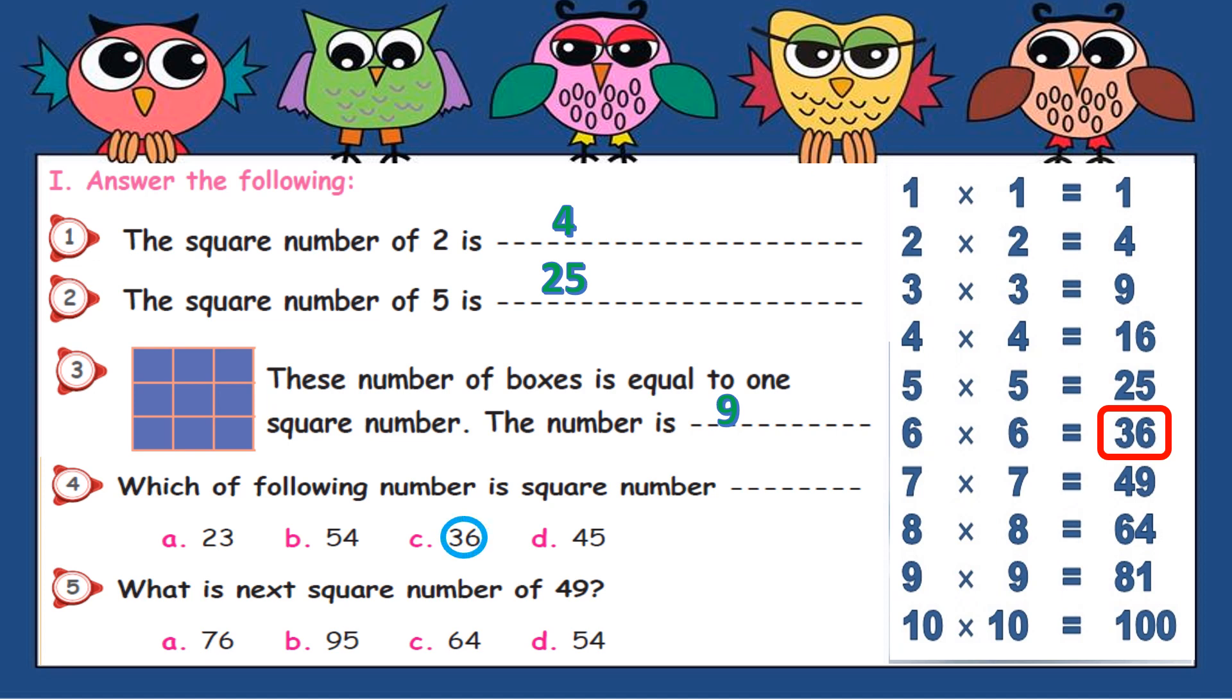Come to fifth, what is next square number of 49? 49 is a square number. Look at here, 36, after 36, 49 is there. After 49, yes, 64 is the correct answer.